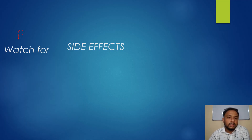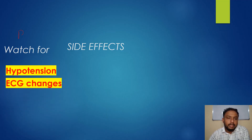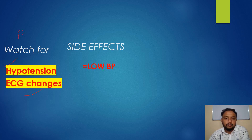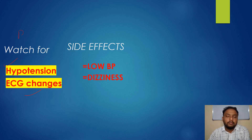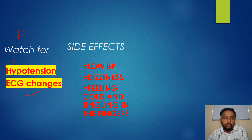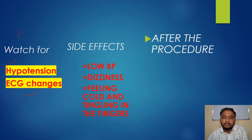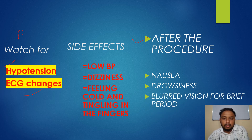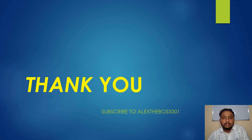During the procedure, watch for hypotension and ECG changes on the cardiac monitor. Because we are removing blood from the patient's body, there will likely be hypotension and some ECG changes. Side effects include low BP, dizziness, drowsiness, feeling cold, and tingling sensation in the fingers. After the procedure, also observe for nausea, vomiting, drowsiness, coldness throughout the body, and blurred vision for a brief period.